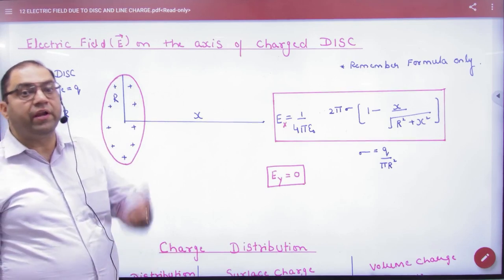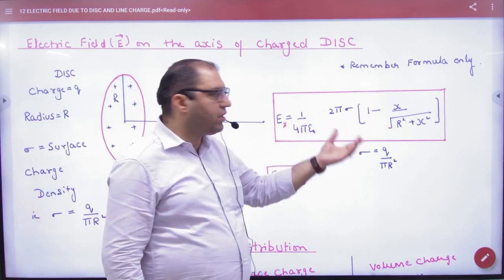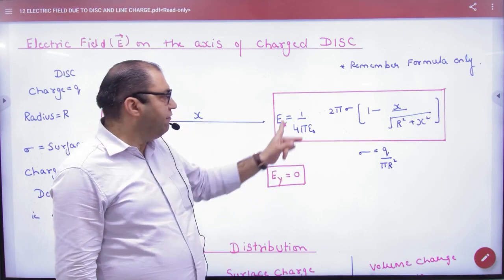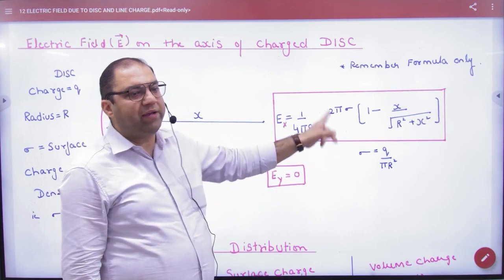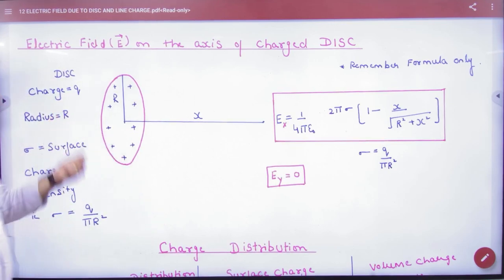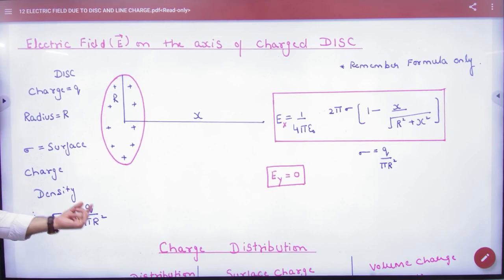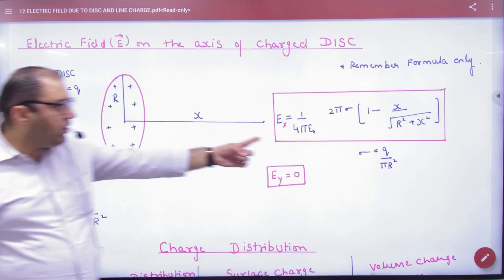All electric field in the ring in the axis. This formula note: Ex equals E naught 1 by 4 pi epsilon 2 pi sigma. Sigma why? Disk's charges distributed over surface area. And surface area distribution, how do we use by sigma? So sigma, how much charge Q and how much surface area pi r square.